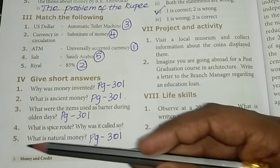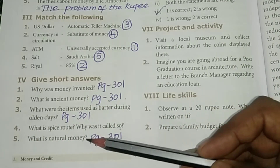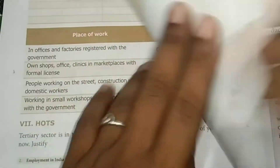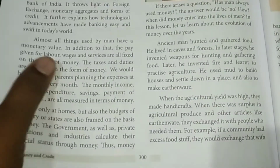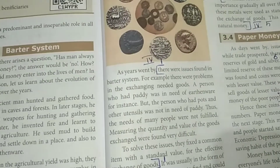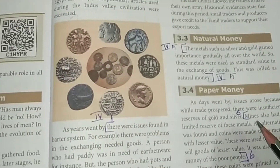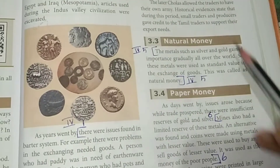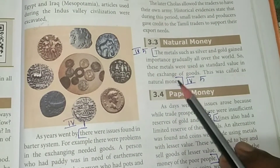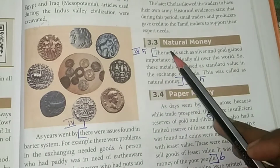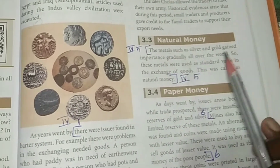Fifth question: what is natural money? The answer is on page 301 under the natural money heading, covering one paragraph of five lines.